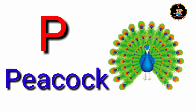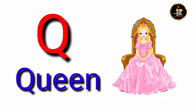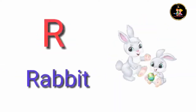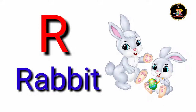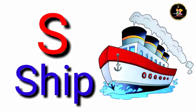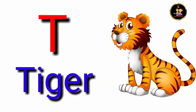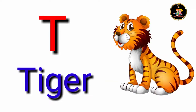P for pea pop, Q for queen, R for rabbit, S for sheep, T for tiger.